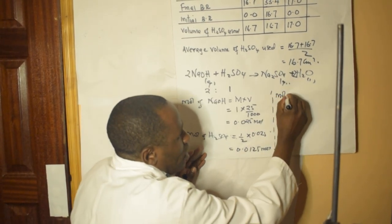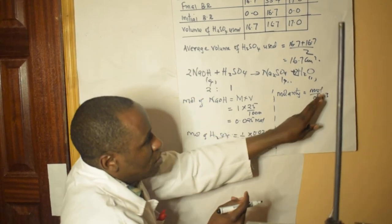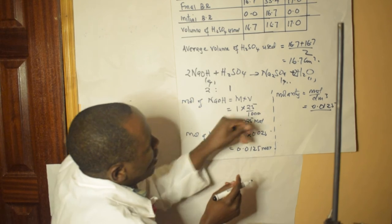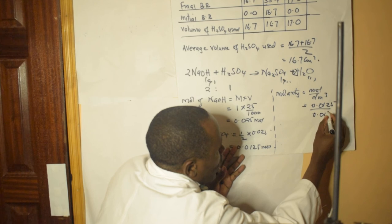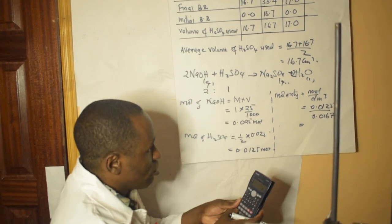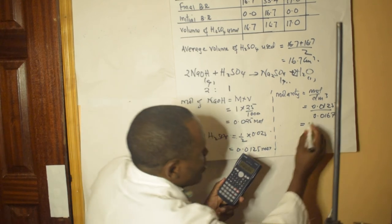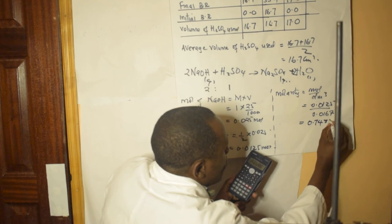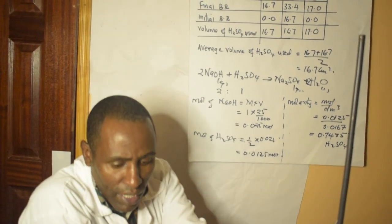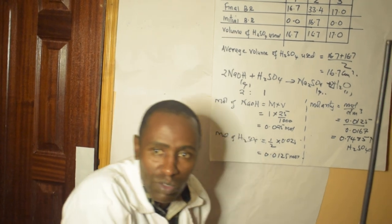Now how do I work out the molarity given the moles and the volume? Molarity equals moles divided by volume in liters. So that's 0.0125 divided by 0.0167 liters — converting 16.7 cm³ by dividing by 1000. This gives 0.7485 M sulfuric acid. That means the solution I used had a concentration of 0.7485 moles per liter. Thank you.